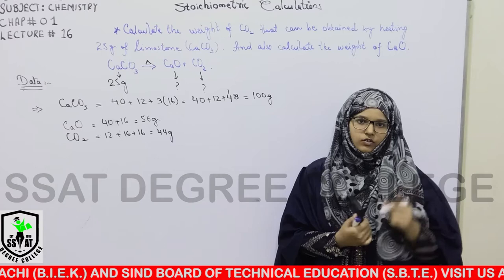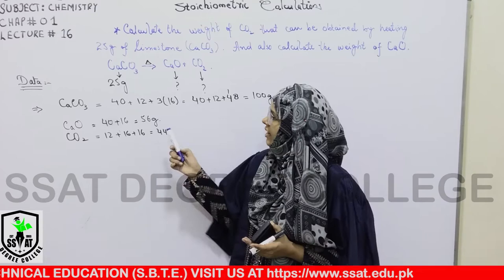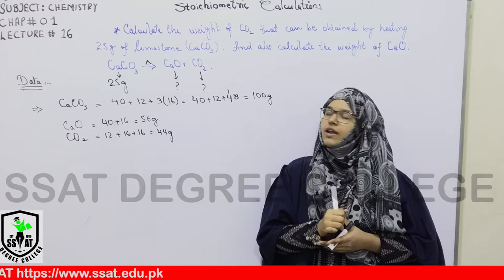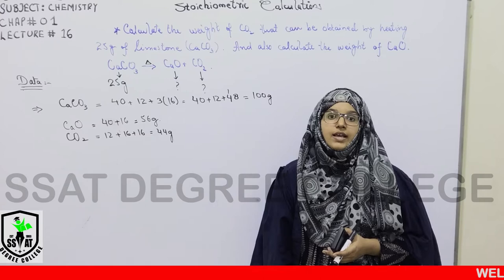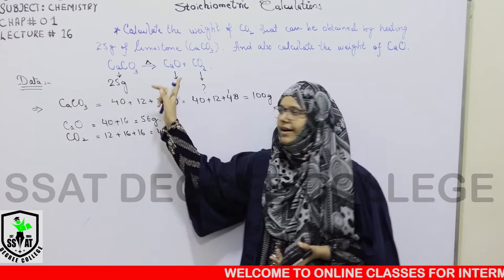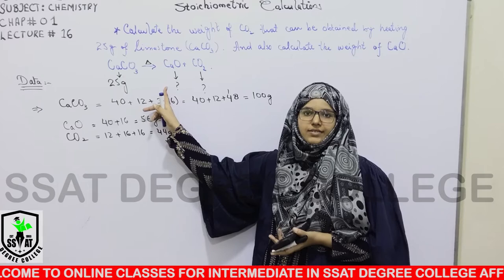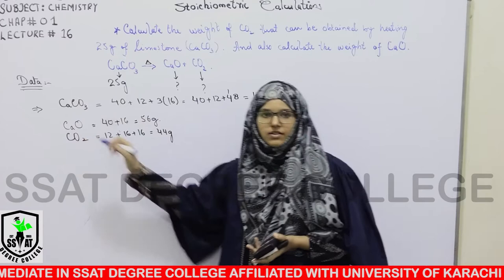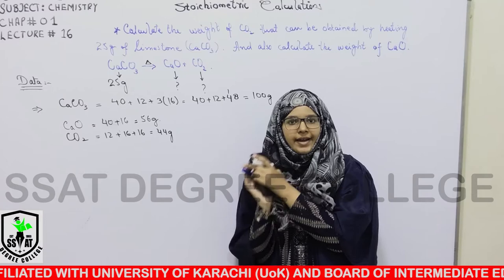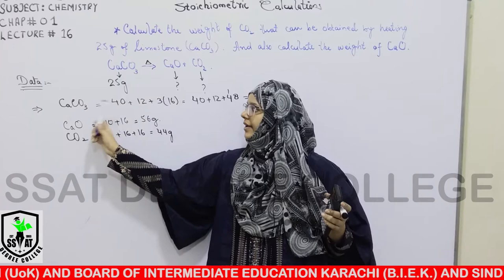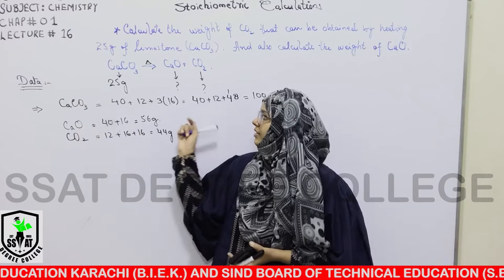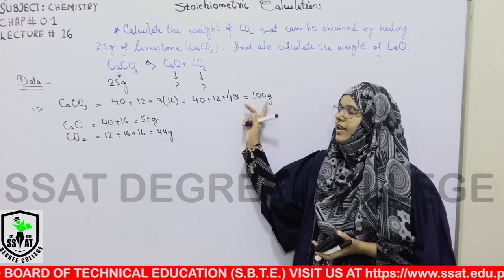The data given is: if you take 25 grams of calcium carbonate, then how much calcium oxide and carbon dioxide will be produced? You will find out the mass from this relationship, called the mass-to-mass relationship. The molecular weight of calcium carbonate: calcium is 40, carbon is 12, and 3 oxygens at 16 each — overall its weight is 100 grams.